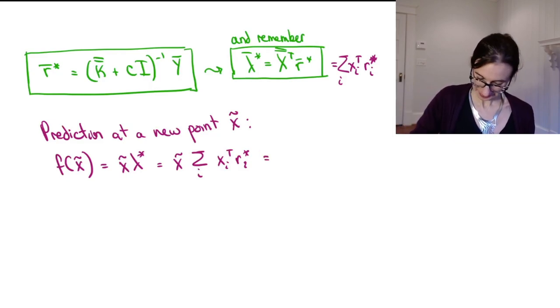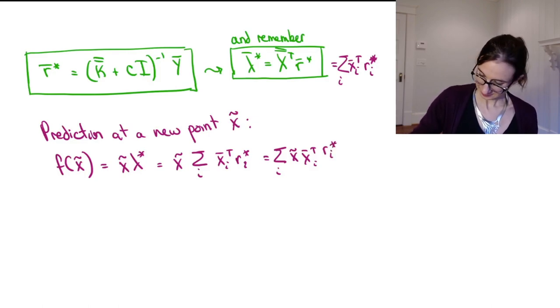So it's x tilde sum over i xi transpose ri star. Now you can see where I'm going here. I've got my inner products.